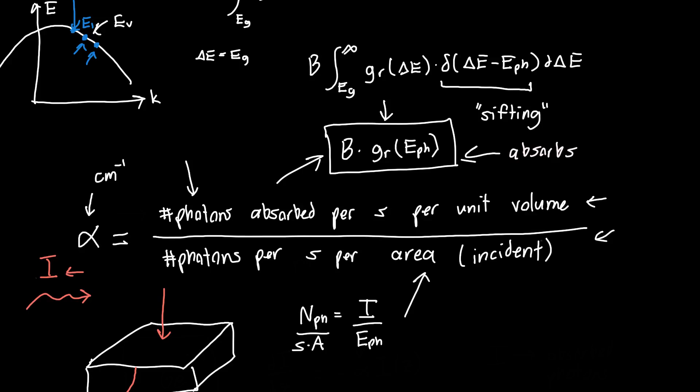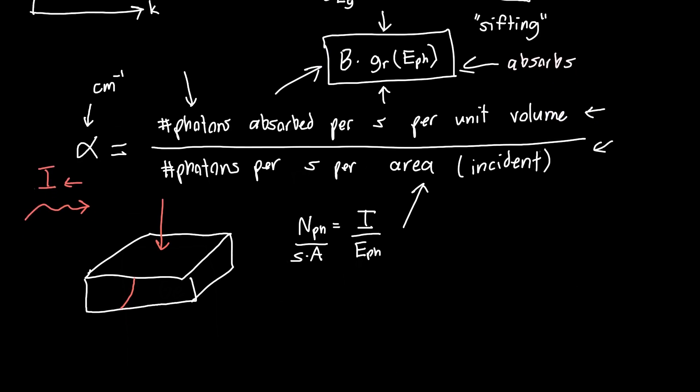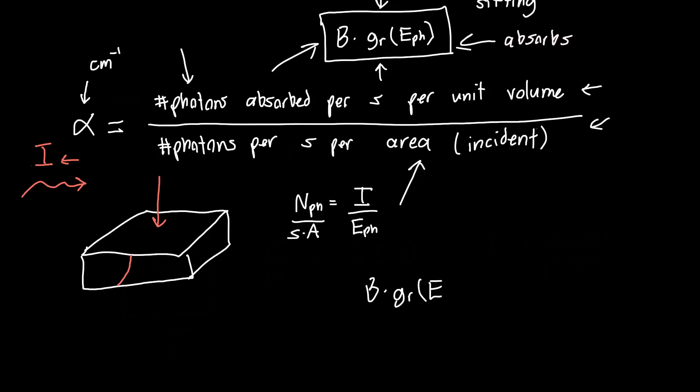So this is the number of photons per second per area. This is what we're going to put on the bottom. And on the top we've just got what we previously calculated. So this coefficient B times our density of states as a function of the photon energy. And we divide that by I over the photon energy. But B we had in terms of our electric field, E naught. And so we'd really like our intensity in terms of the electric field. And so we can just substitute I is equal to E naught squared over two times the wave impedance of free space, eta naught. And this eta naught has a value around 377 ohms. It's just a convenient way of converting from intensity to electric field. And since this is generally in a material, we need to divide eta naught by n, or multiply this whole quantity by n, the refractive index.